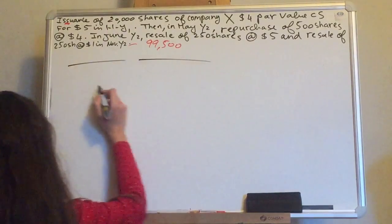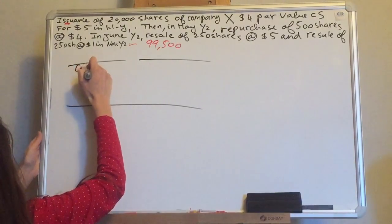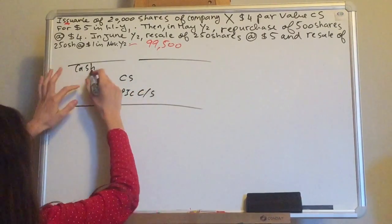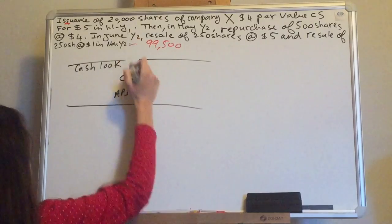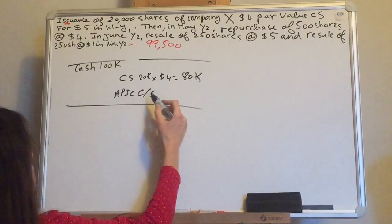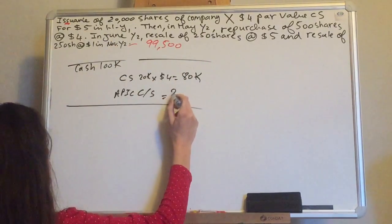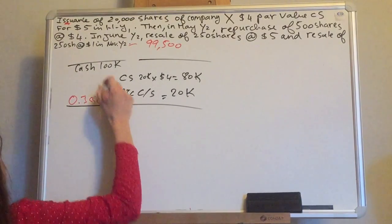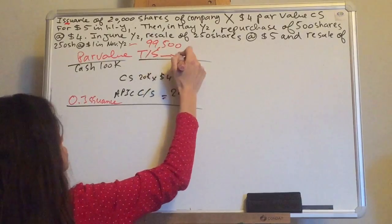The original issuance is the same as before. Issuance — you're selling — your cash increases on the debit side. 20,000 shares times $5 equals $100,000. In the credit side for the original issuance: common stock is number of shares times par value, $20,000 times $4 equals $80,000. APIC common stock is the excess: $5 minus $4 times 20,000 shares equals $20,000.